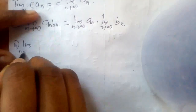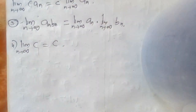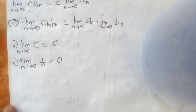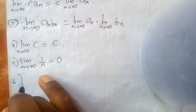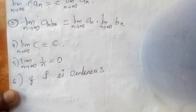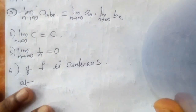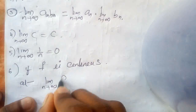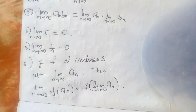The limit of a constant sequence is the constant itself. And limit n → ∞ of 1/n is 0, as we have already seen.